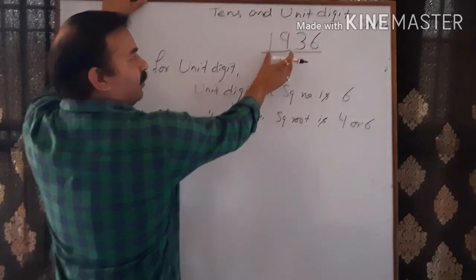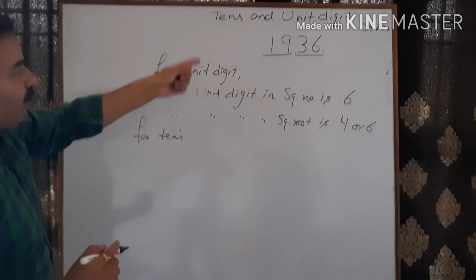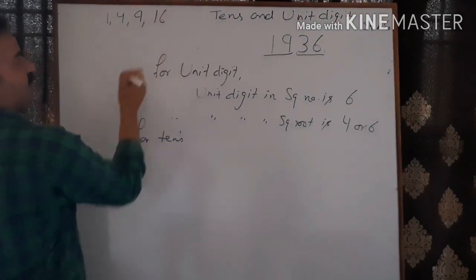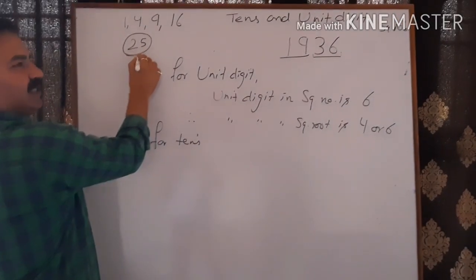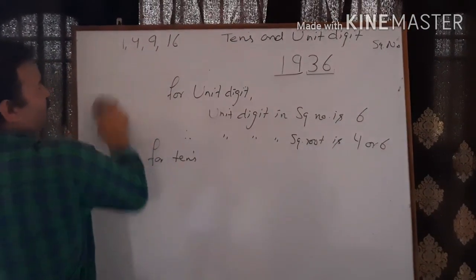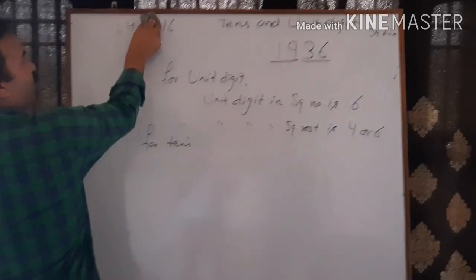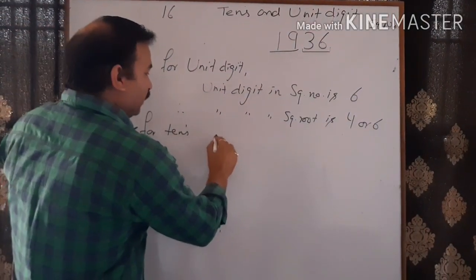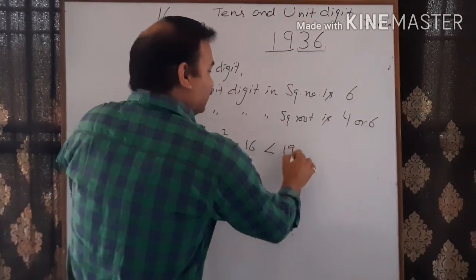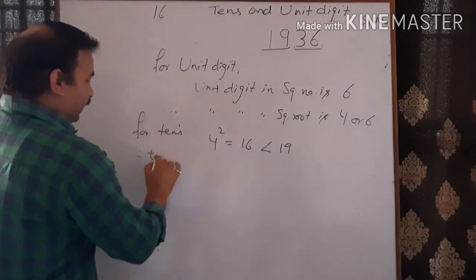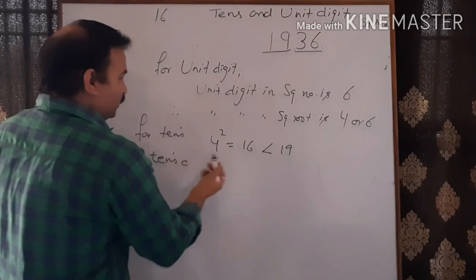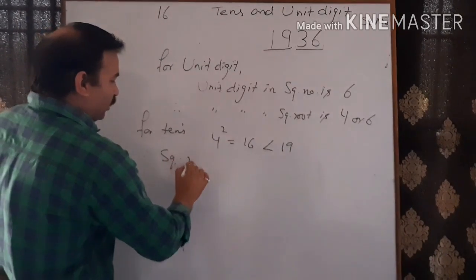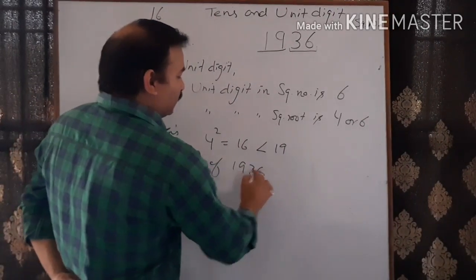For the tens digit, we have to find the highest square number that is smaller than 19. The square numbers below 19 are: 1, 4, 9, 16 — and 25 is bigger than 19, so we remove it. The highest but smaller than 19 is 16, which is the square of 4. So for the tens digit, we write that 4² = 16 < 19, therefore the tens digit is 4.